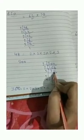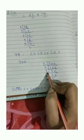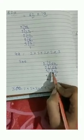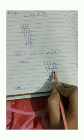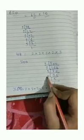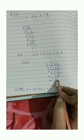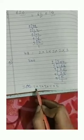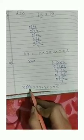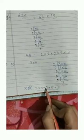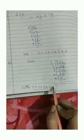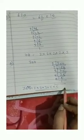75 is not divisible by 2, so we move to the next prime number, which is 3. After dividing 75 by 3 we get 25, then divide 25 by 5 to get 5, and again 5 by 5 to get 1. So the prime factors of 300 are 2 × 2 × 3 × 5 × 5.